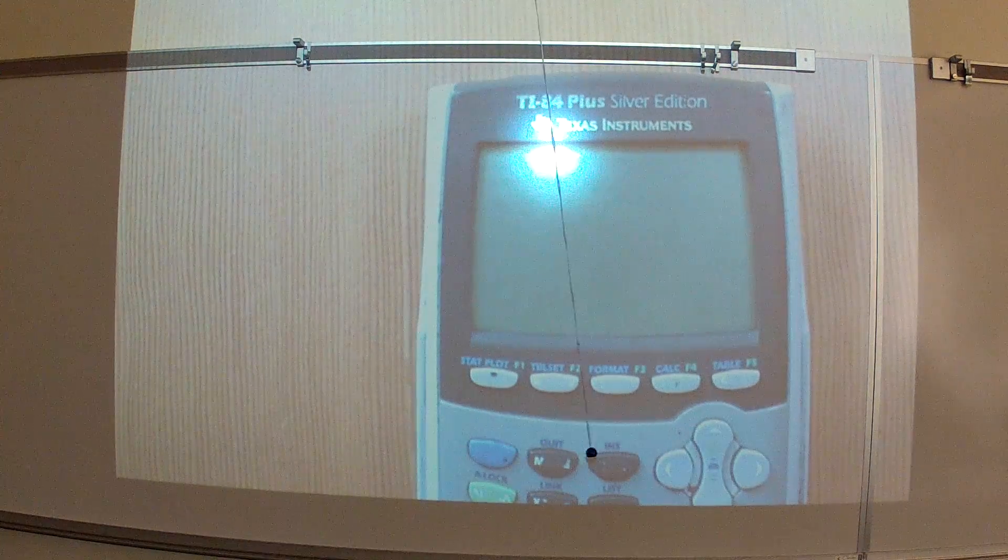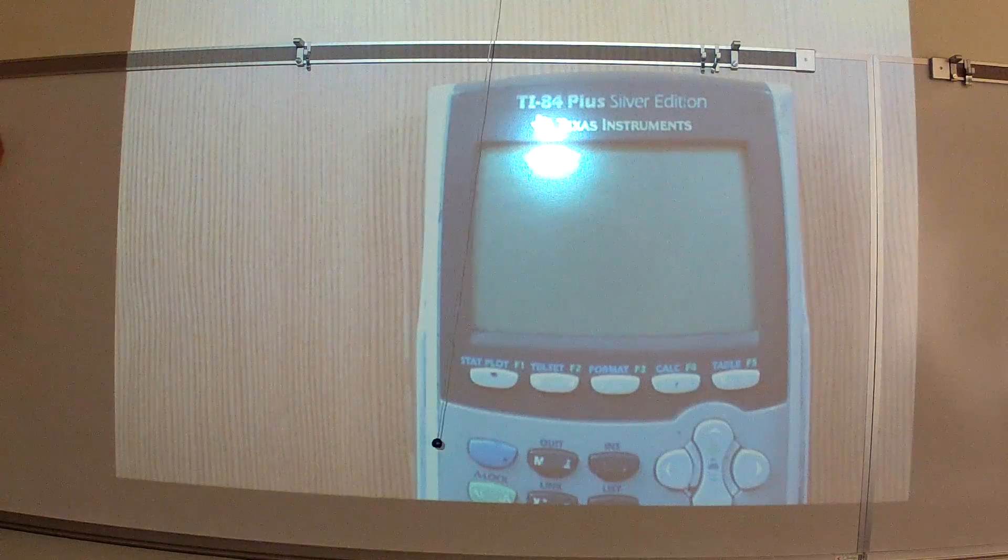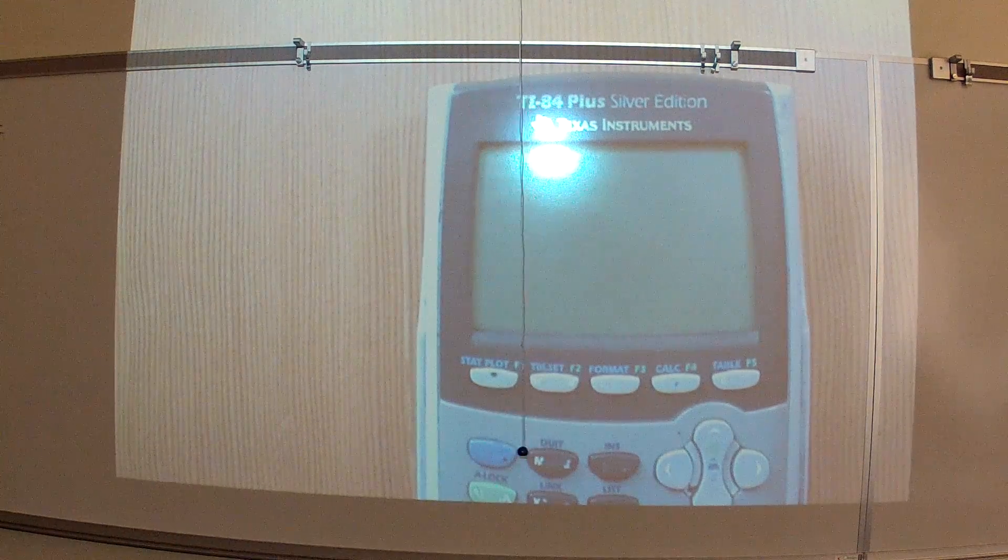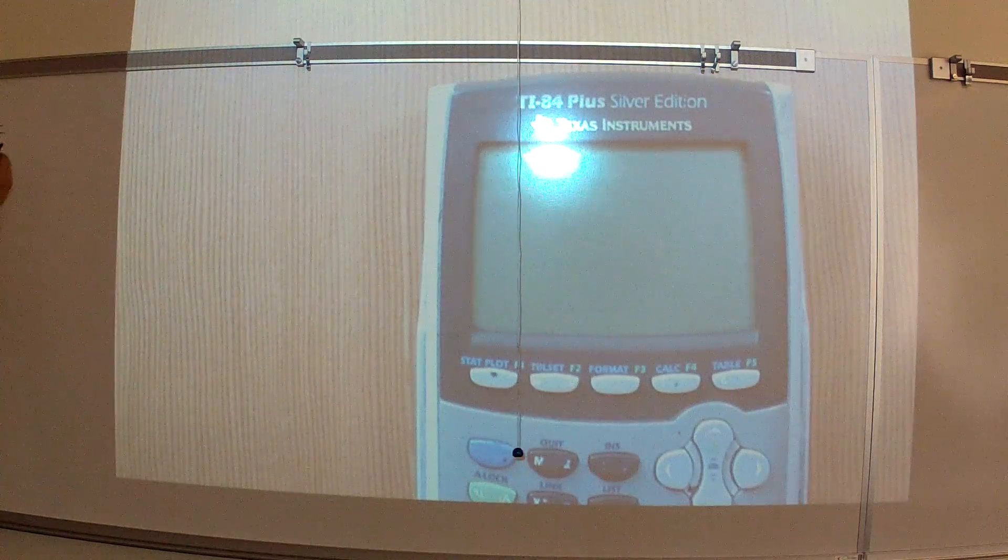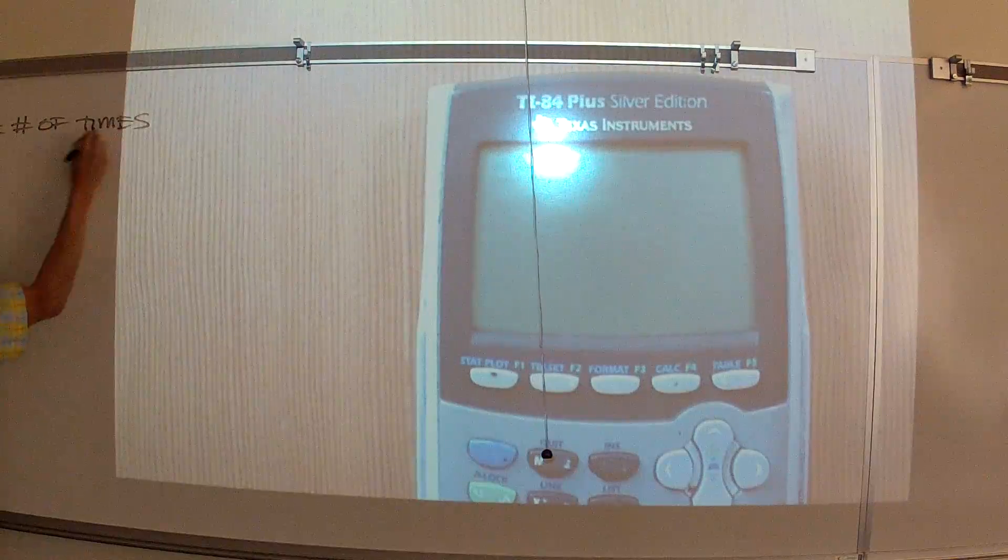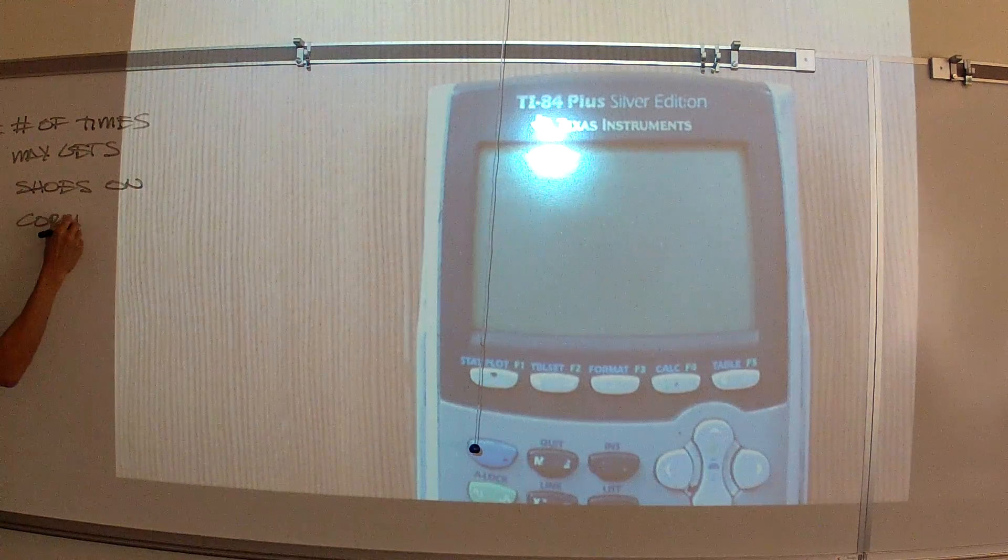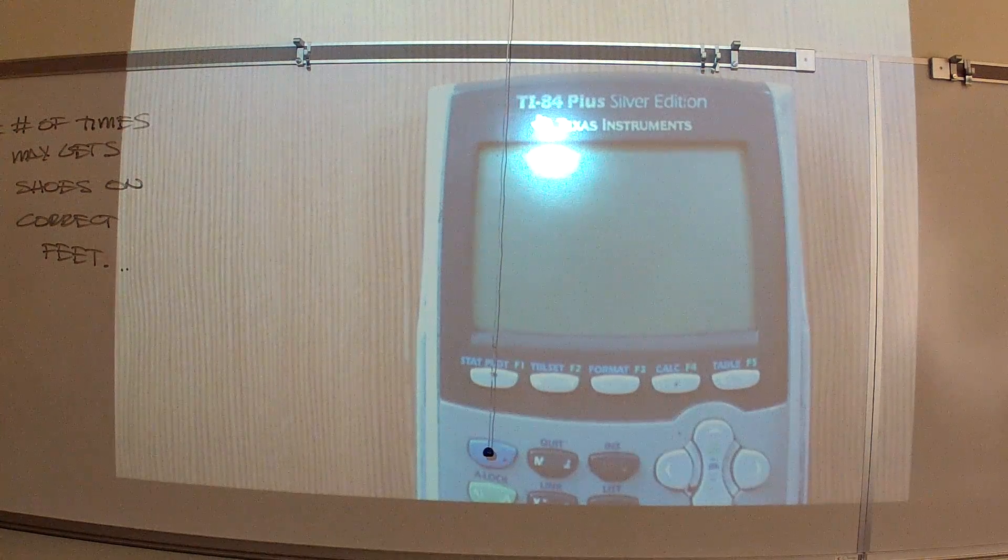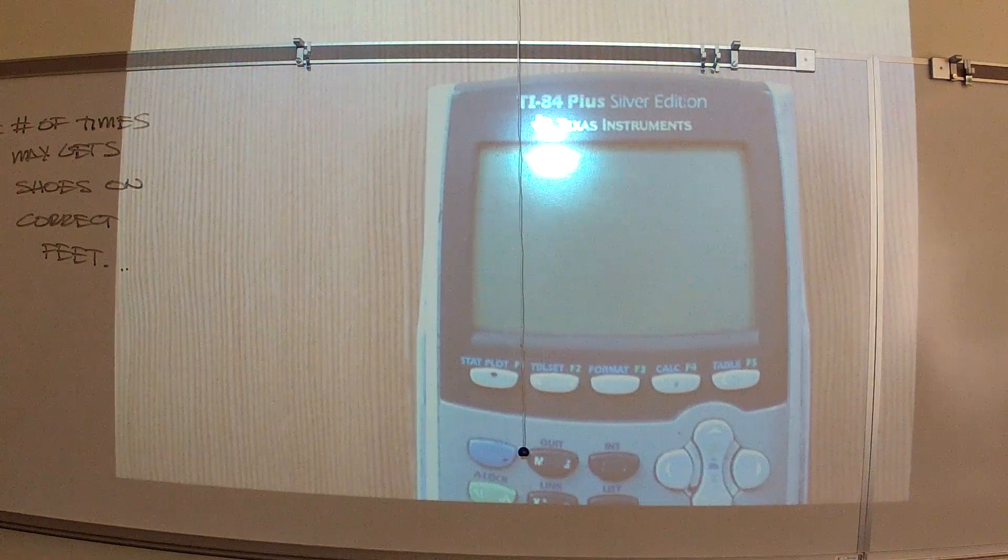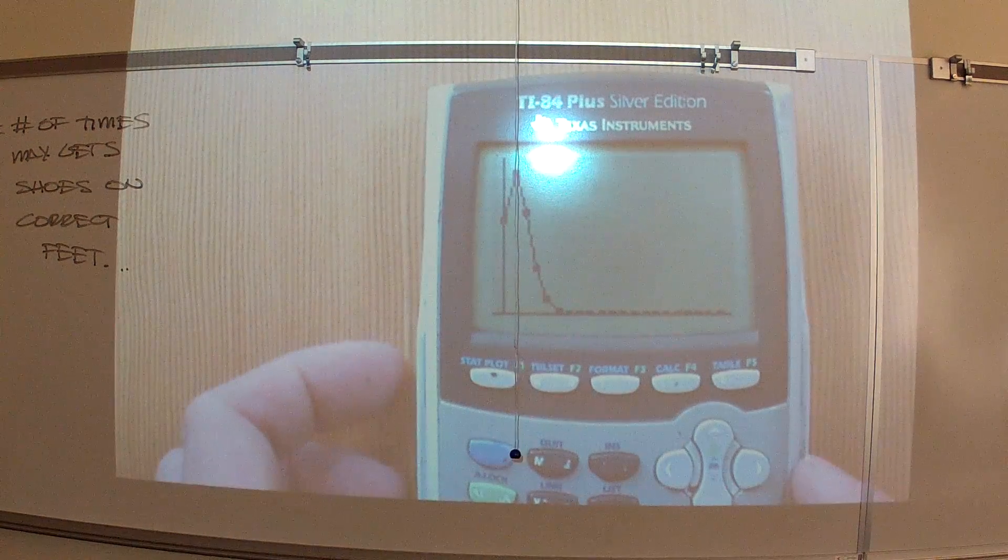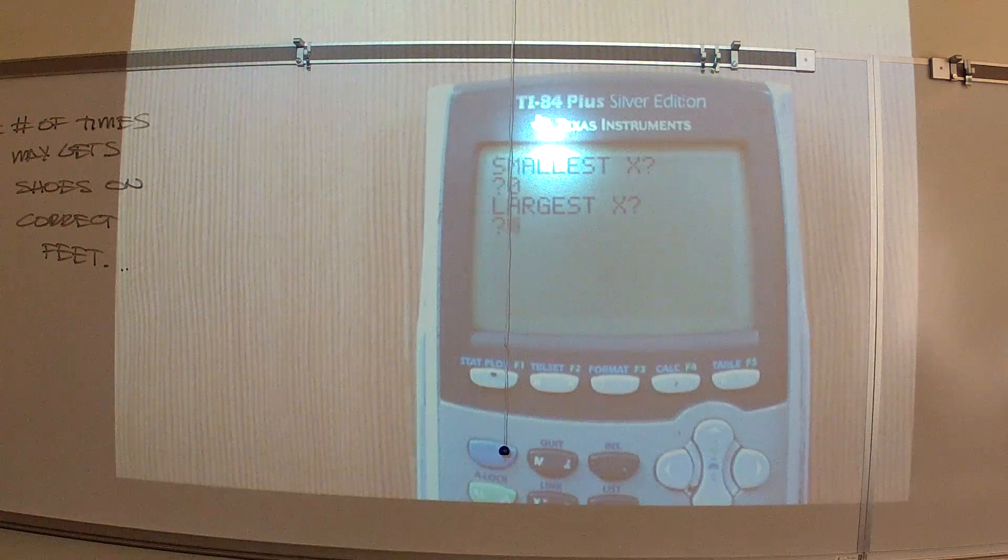Would the smallest be 0 or 1? Let's define Max's random variable. What am I interested in? How many times he gets his shoe on the correct feet? So my random variable is going to be the number of times Max gets his shoes on the correct feet. Now the question is, what's the minimum number of times? Zero. He might never get them on the correct feet. He's guessing, right? He may flip tails in his head every time. He's got the wrong shoe on the foot each time.